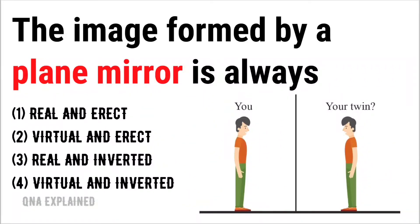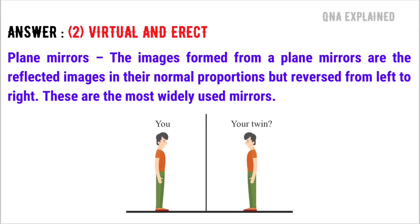The image formed by a plane mirror is always: real and erect, virtual and erect, real and inverted, or virtual and inverted. The answer is virtual and erect.